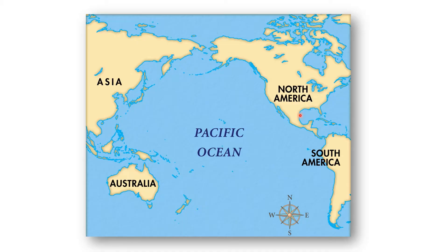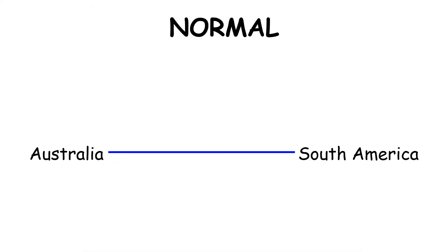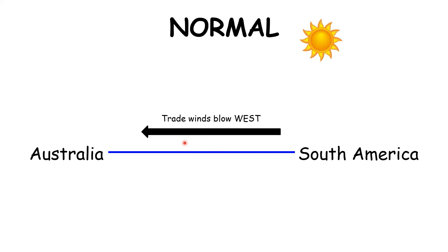It all concerns the Pacific Ocean. We're looking at winds blowing over the Pacific Ocean that drag the surface of the ocean with them, creating ocean currents going either towards Australia or towards South America. Here is South America to the east and over here is Australia to the west. Normal conditions mean the sun is heating up the surface of the ocean, so when the trade winds blow west these warm surface ocean waters move towards the west, towards Australia.